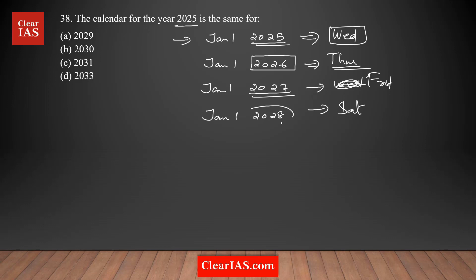We know that 2028 is actually a leap year — it's a multiple of four — so it's a leap year. That means there are two odd days in this year. For that reason, Jan 1st 2029 will shift two days forward, so it's going to be on Monday. We can eliminate that option because Jan 1st 2025 is Wednesday but here it's Monday — they're different — so option A is eliminated.